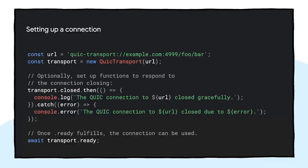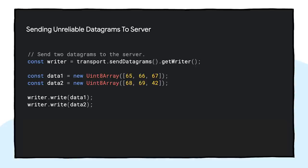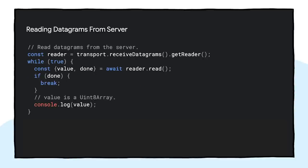Here is a quick example setup for how you can actually use WebTransport. In this part of the code, we set up a new QuicTransport, which is a specific subtype of WebTransport, and create that object passing in the URL we want to connect to. Then we set up some simple logging and await the transport being ready. We can then grab the writer from the sendDatagrams function of our transport object, which we use to send data at any point. Remember that this data does not have any guarantees of delivery or ordering. To read data from the server, we get the reader from the getReader function, and in a while-true loop, we read things from that reader and console log out the values.